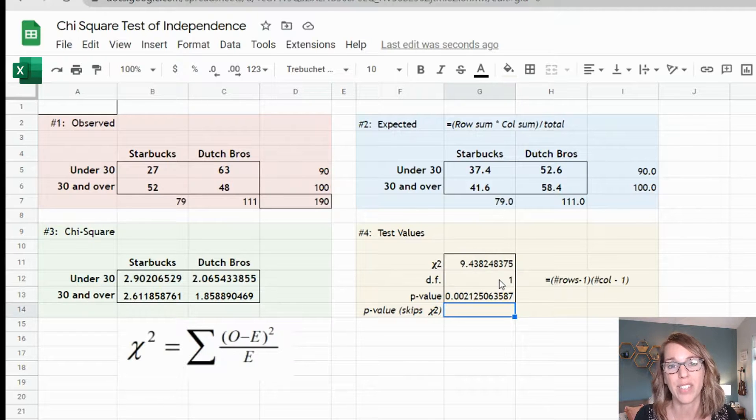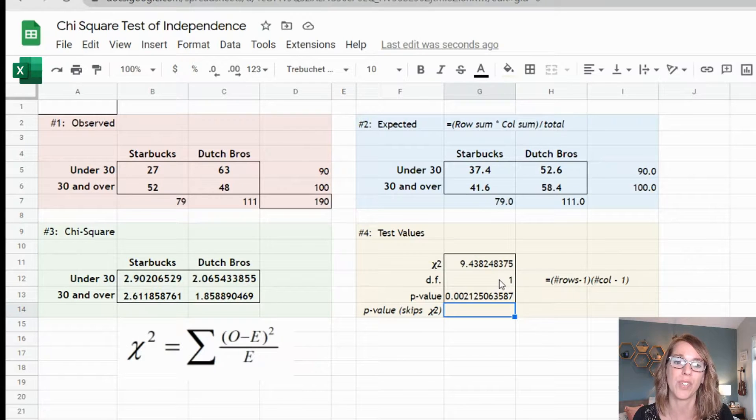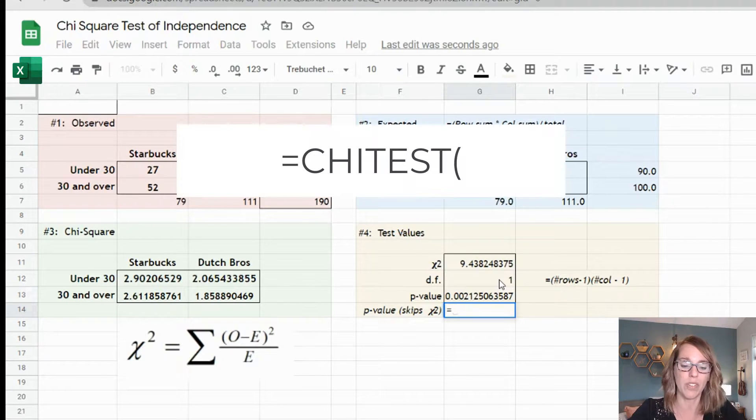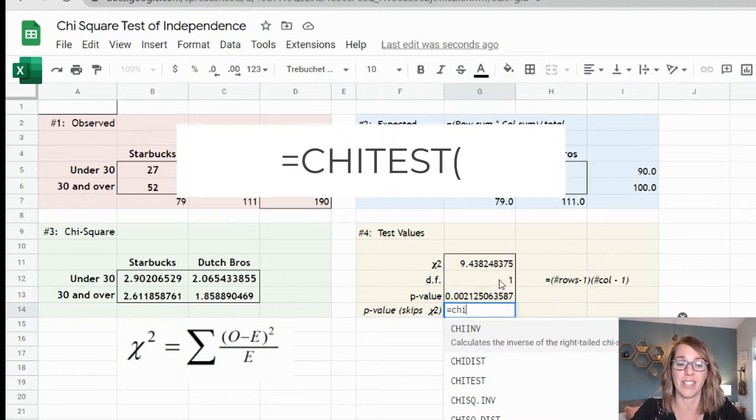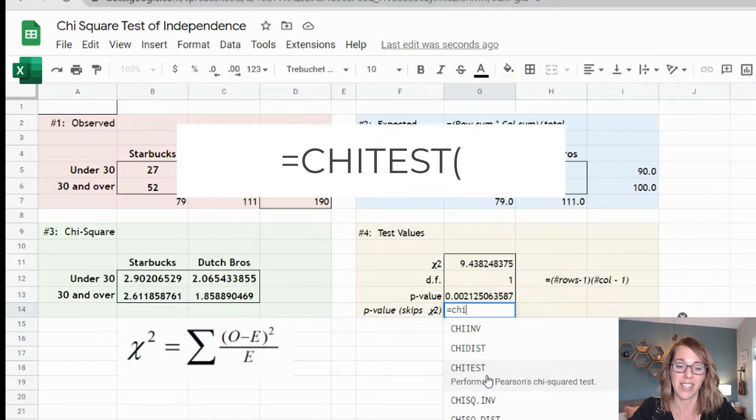Now I can also find this p-value using what I call a one step. This skips finding the chi-score value altogether, but you do need the observed and expected, but it's really nice. I'm going to type in equals, this time chi-test. So I want chi-test, which is right here.